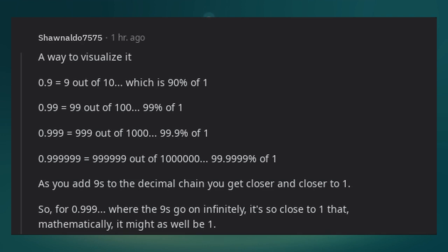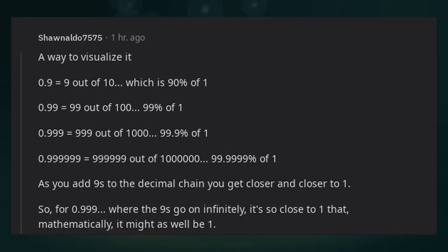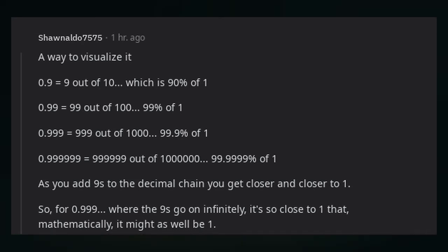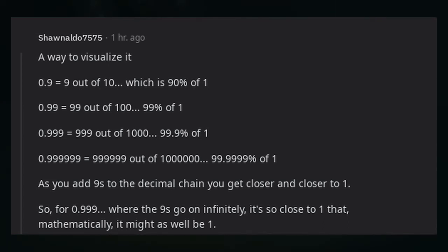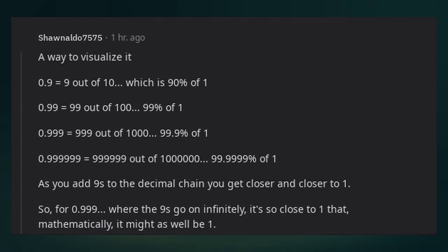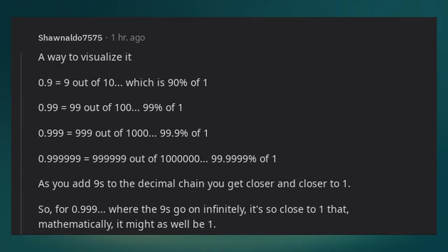A way to visualize it: 0.9 out of 10, which is 9/10 of 1. 0.99 out of 100—99/100 of 1. 0.999 out of 1000—99.9% of 1. As you add nines to the decimal chain, you get closer and closer to 1.